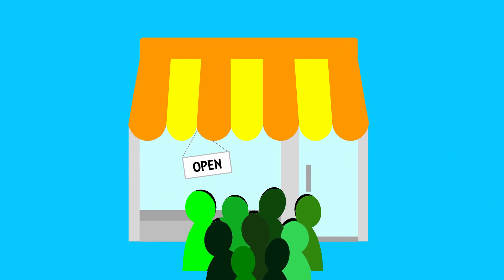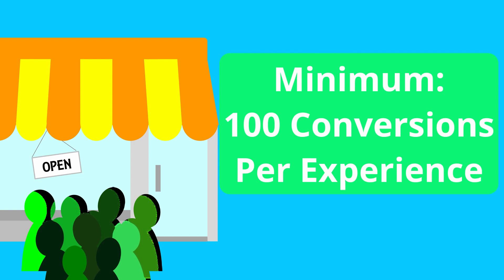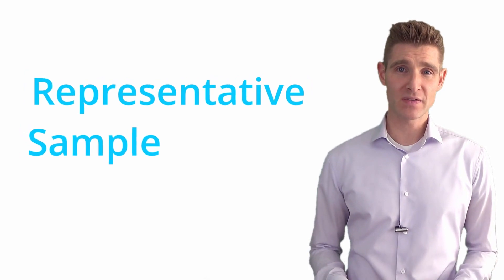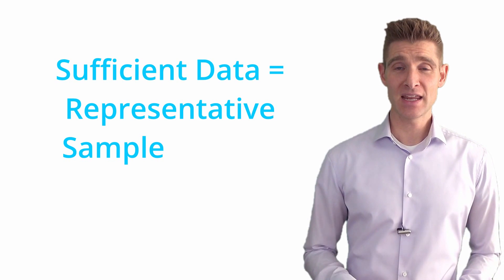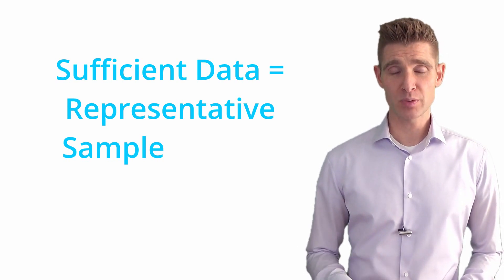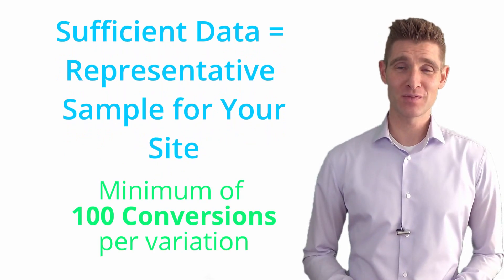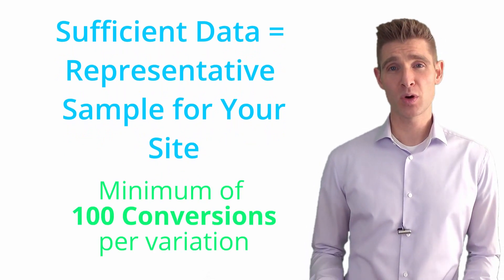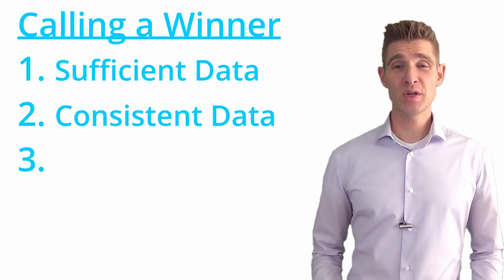If you're a startup and you only get a few hundred conversions, you want to make sure that as a minimum baseline you have at least 100 conversions per experience to be able to call a winner. There's a minimum threshold for everybody — you don't want to be interpreting data with just a few conversions, but you also want it to be a representative sample. Point number one: you need sufficient data that is representative to your business, with at least 100 conversions per variation.